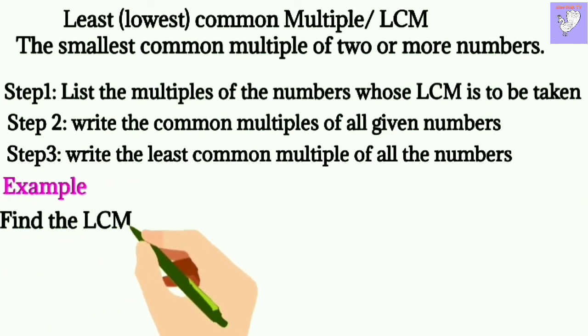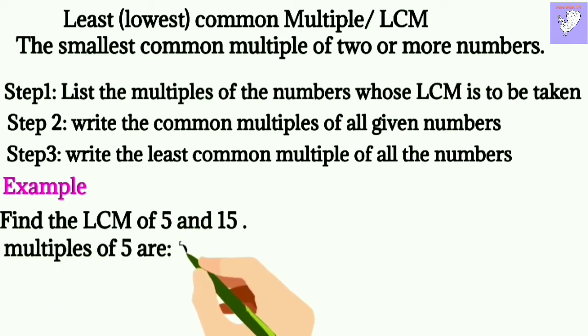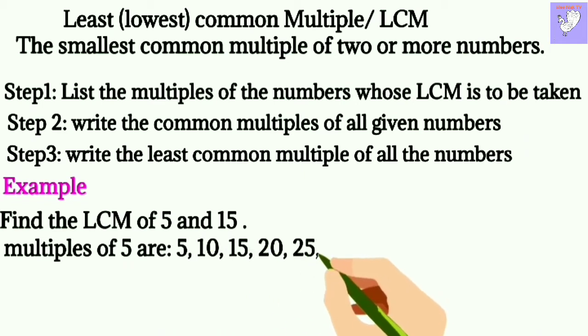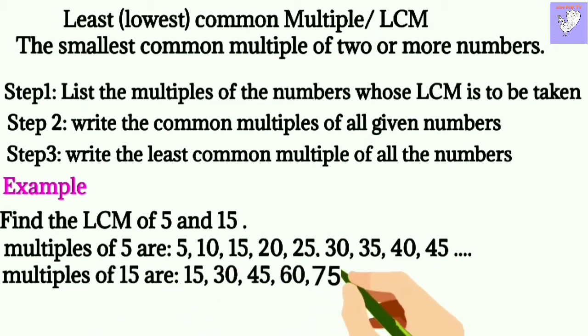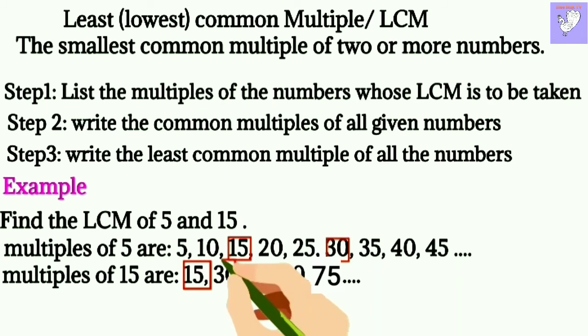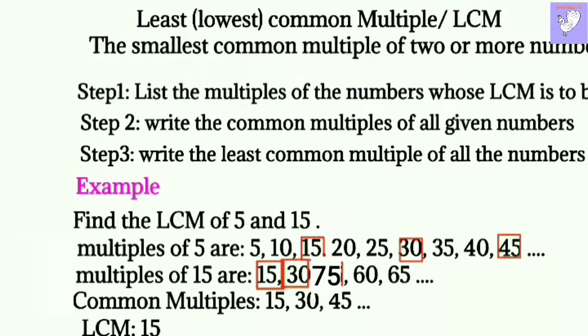For example, let's find the LCM of 5 and 15. The multiples of 5 are 5, 10, 15, 20, 25, 30, 35, 40, 45 and so on. And multiples of 15 are 15, 30, 45, 60, 75 and so on. Common multiples between them are 15, 30 and 45, and the LCM or the least common multiple is 15.